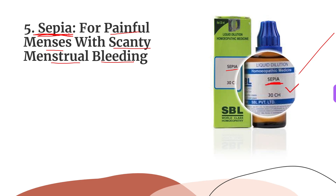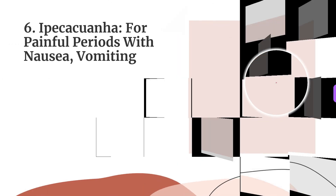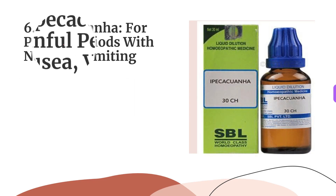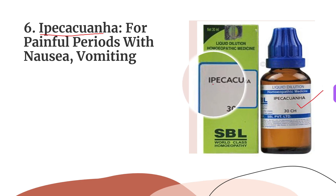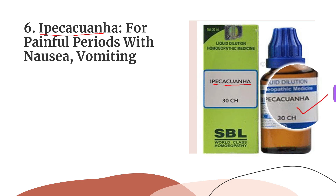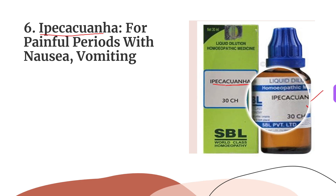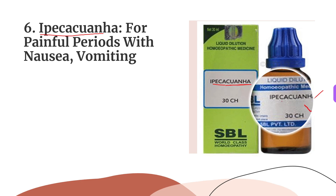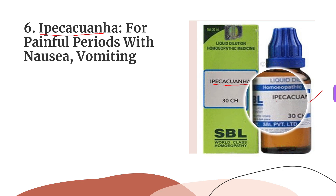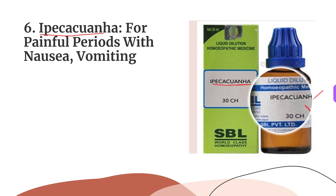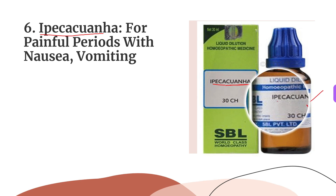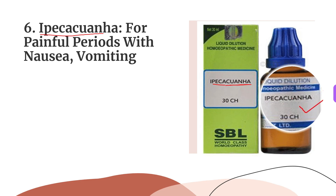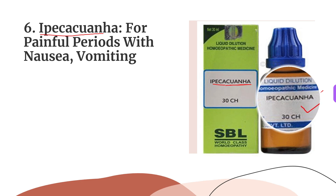The sixth medicine is Ipecac, for painful periods with nausea and vomiting. There is persistent nausea during periods along with pain in the lower abdomen; cutting-type pain is felt in the uterus, going from left to right side. Bleeding is heavy and bright red in color. Ipecac can be taken in 30 potency once or twice during menses to relieve these symptoms.